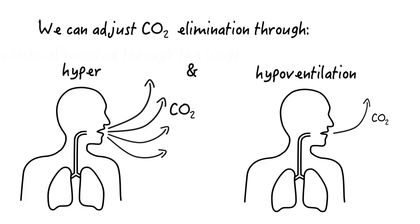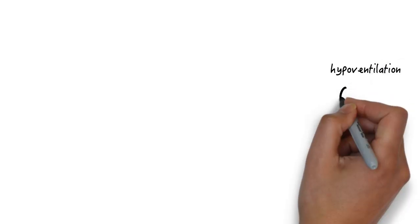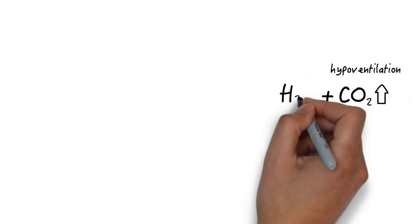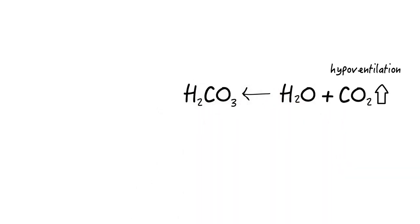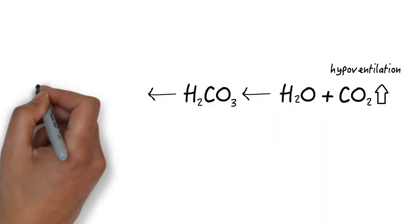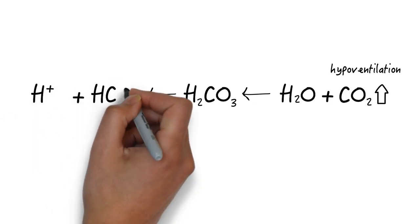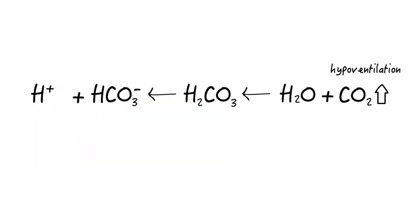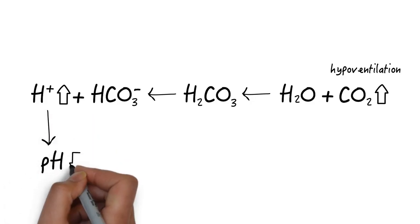For completeness sake, it's important to understand that this equilibrium also works in the other direction. When the patient is hypoventilating, carbon dioxide accumulates and combines with water to form carbonic acid, which then dissociates into hydrogen ions and bicarb. Hydrogen ions will go up in hypoventilation and the pH will consequently drop.